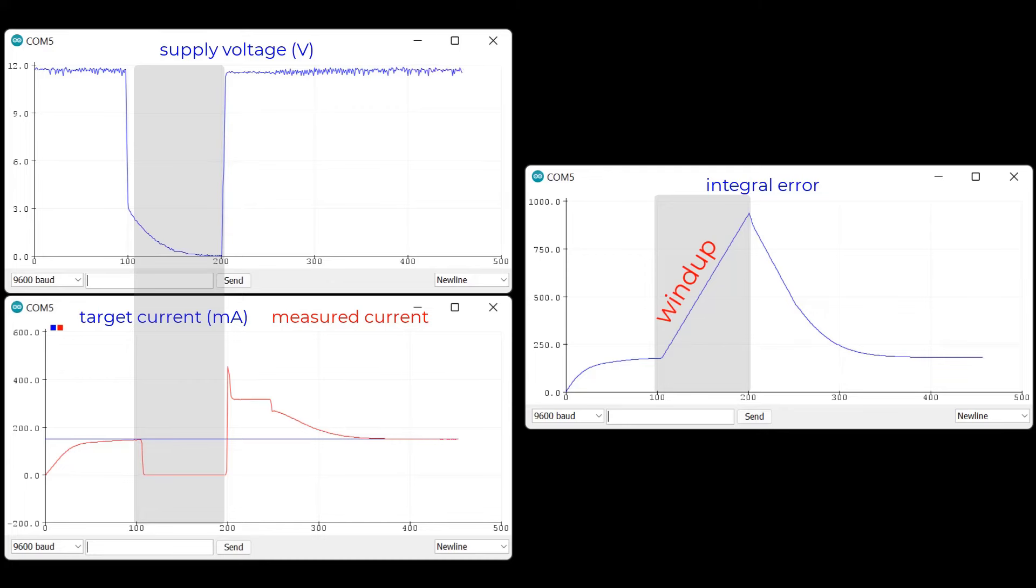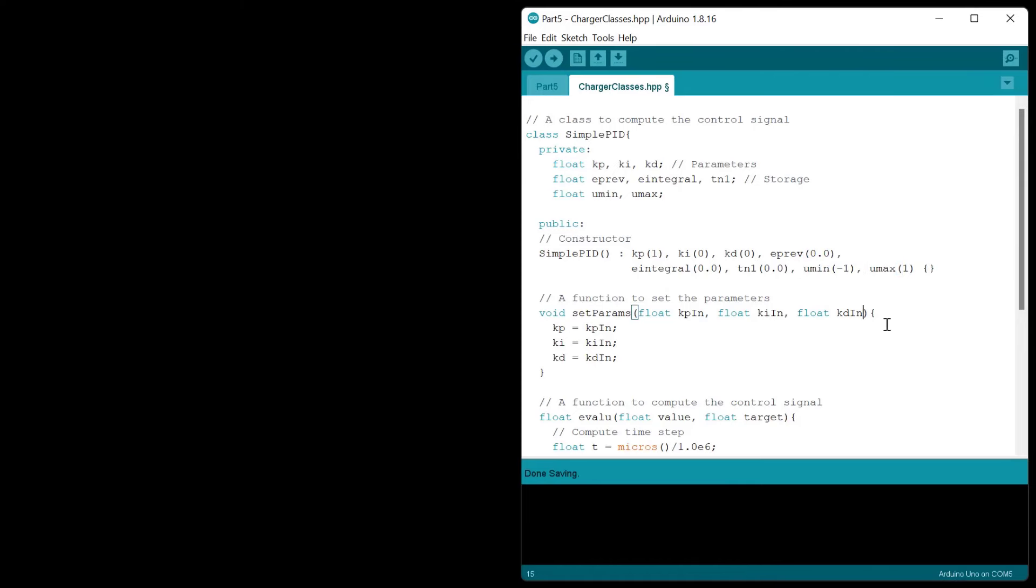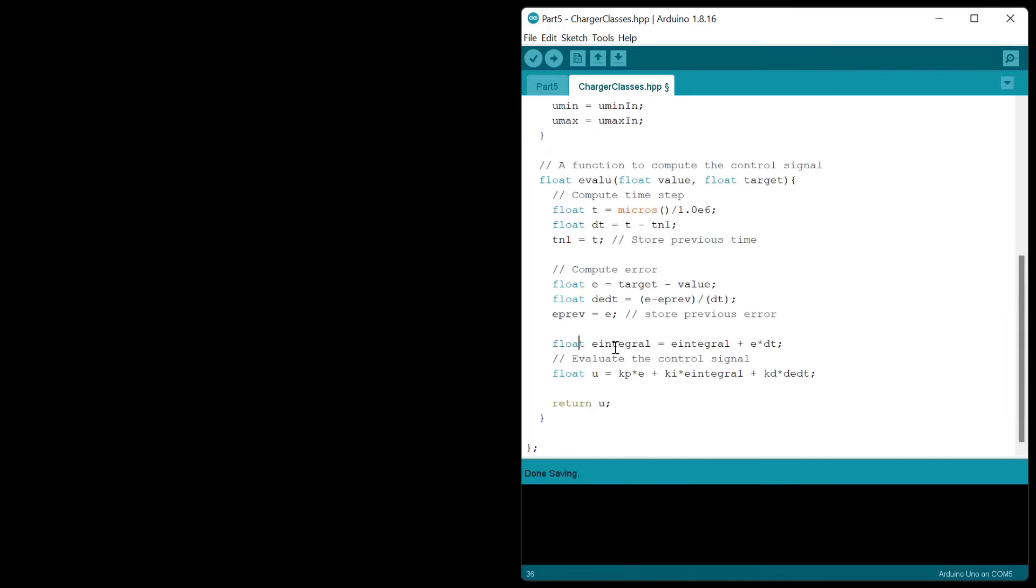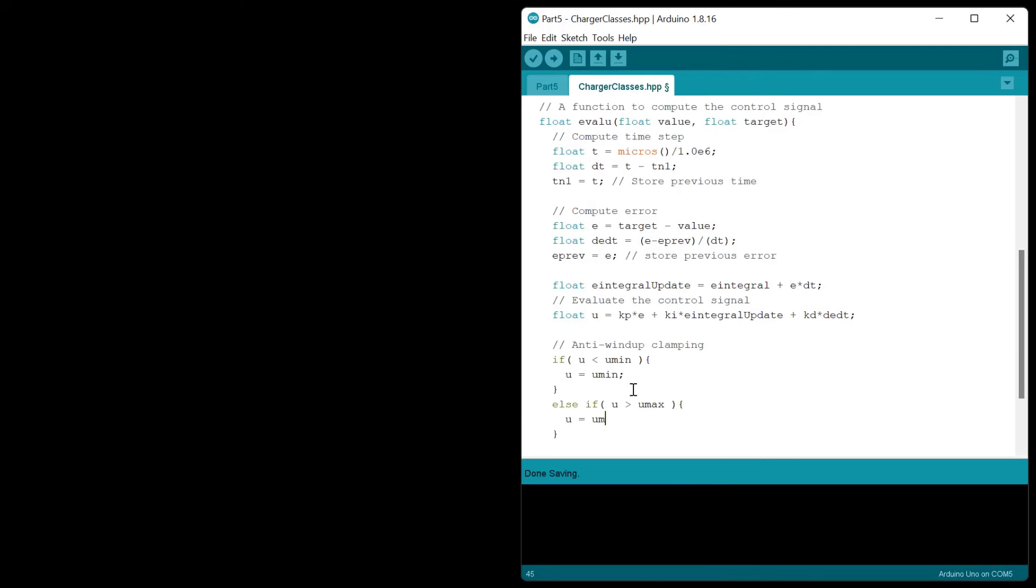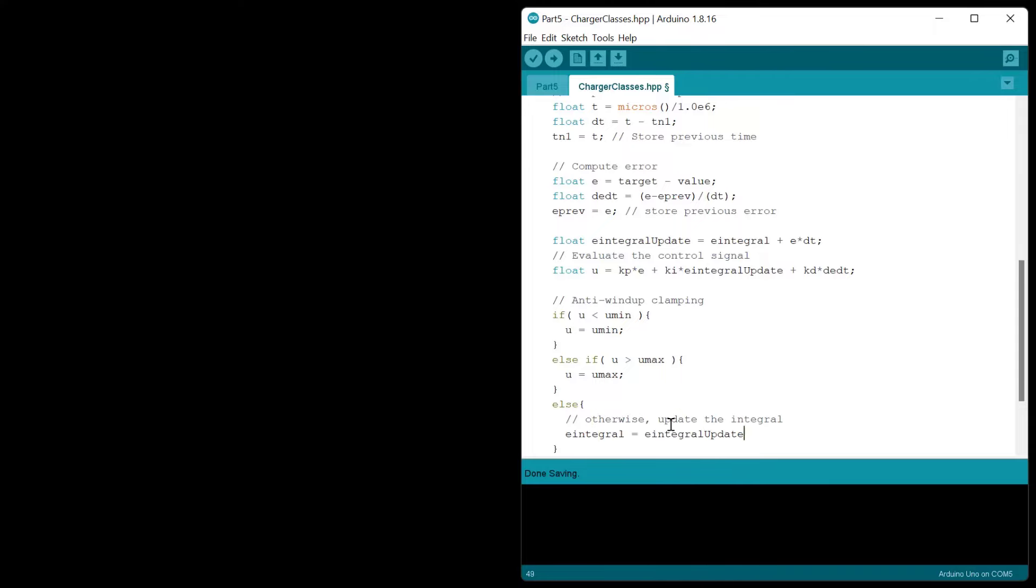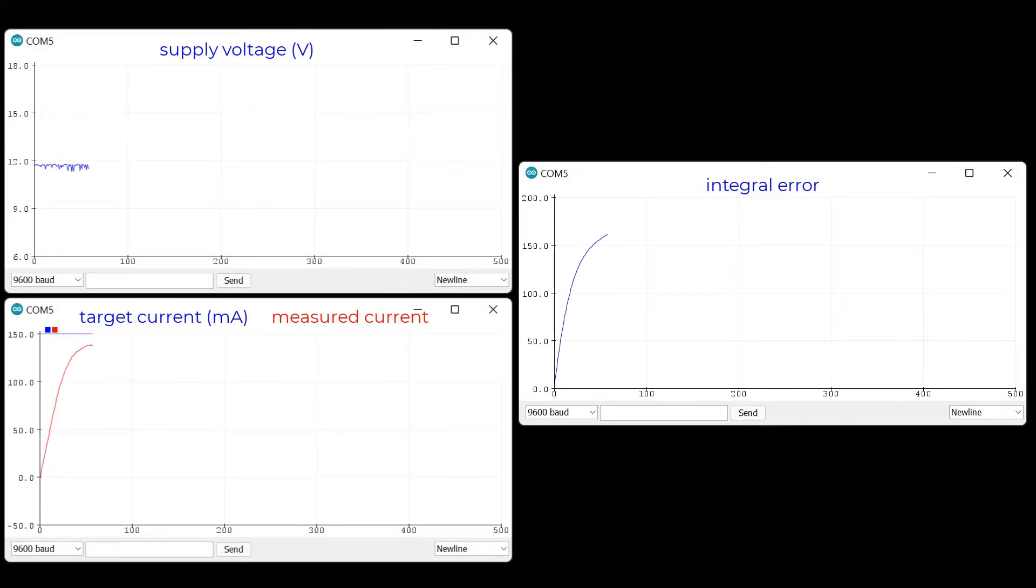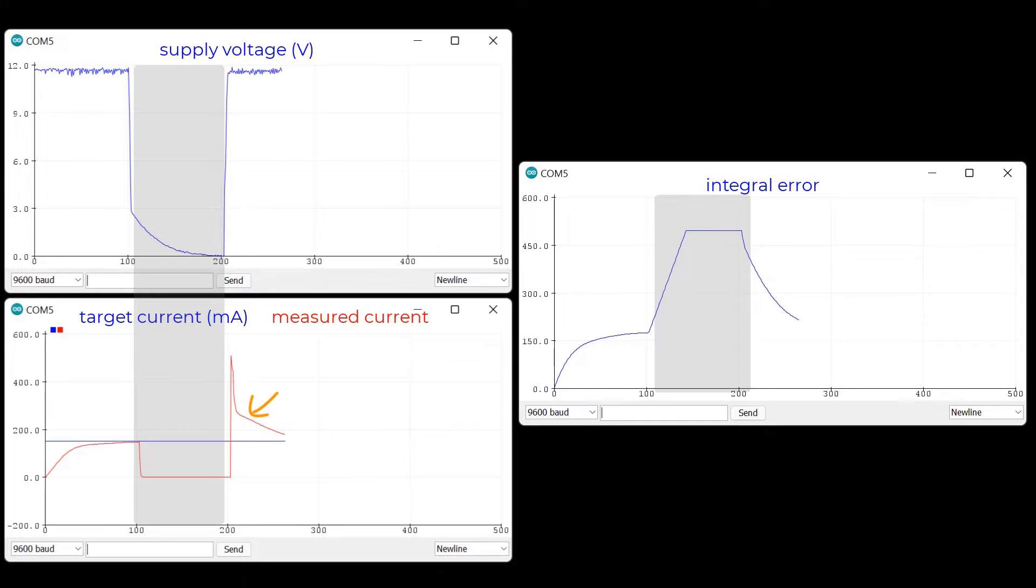We can fix this using an anti-windup technique. One anti-windup method is clamping. When the duty cycle reaches its maximum, we will clamp the integral error, so no additional error is accumulated. In my PID control code, I'll add parameters for the maximum and minimum control signal value. In this case, those are maximum and minimum values of the duty cycle. Then I'll use an if statement to identify when the duty has reached a limit. If a limit is reached, no additional error will be added, preventing windup. Otherwise, the error is accumulated as before. Let's test it. You can see that the integral error stops accumulating when the duty cycle is maximum. Now the controller responds much more quickly when the supply returns because it doesn't have all that accumulated error to unwind.